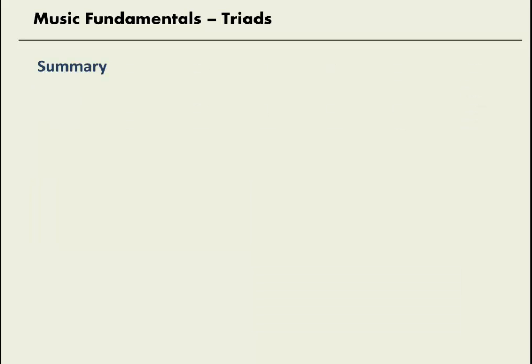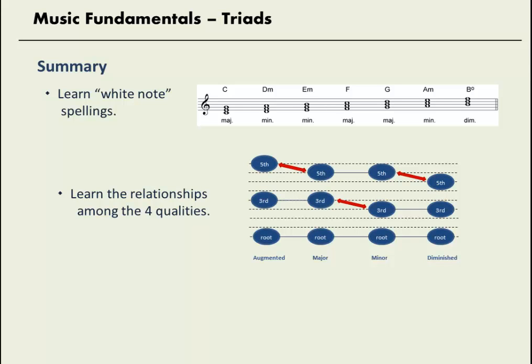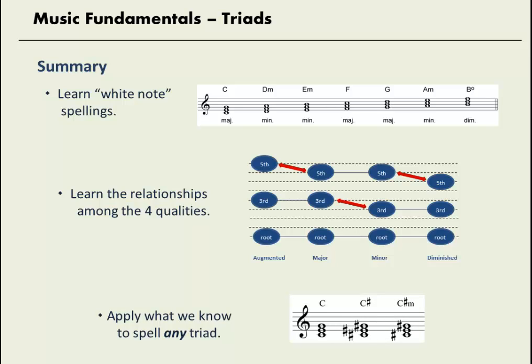So let's summarize what we know. If we learn the white note spellings — the seven triads built on white notes — and if we learn the relationships between the four qualities — how to go from major to augmented, major to minor, minor to diminished — we can put all this together and spell any triad quickly and efficiently. Notice that we haven't talked about key or spelled a lot of intervals. Once we know the white note spelling and the relationships, we can spell any triad without reference to key, without counting intervals. I'm Dr. Rick Hoffman from Belmont University. Good luck with your studies, and thank you for watching.